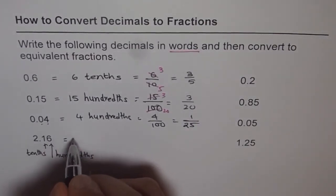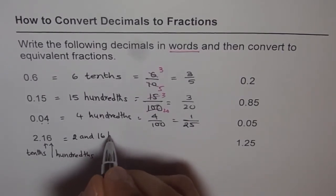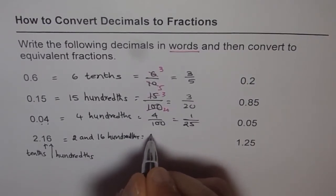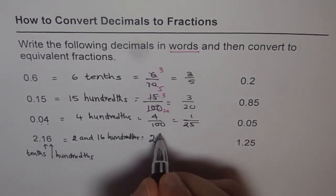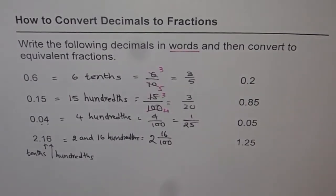2.16 is 2 and 16 hundredths. So that means 2 whole number and 16 hundredths, 16 over 100. So that is how you can write it straight.